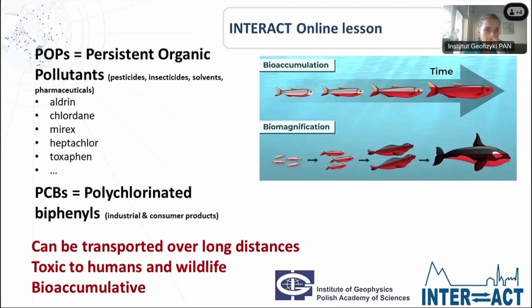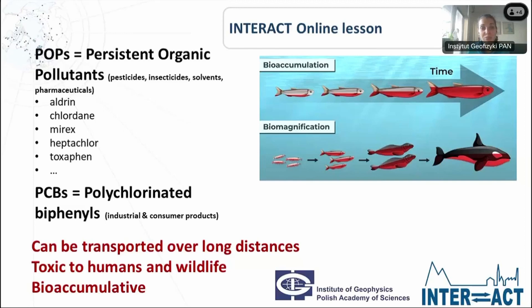These substances are bioaccumulative — connected with bioaccumulation and biomagnification — they are highly toxic and carcinogenic to humans and wildlife, and they can be transported over long distances, which is why they are found in the Arctic. We might ask what the source of PCBs or POPs in the Arctic is — there are none produced there, but all of these harmful substances are transported from different places on Earth, much like plastics and microplastics.